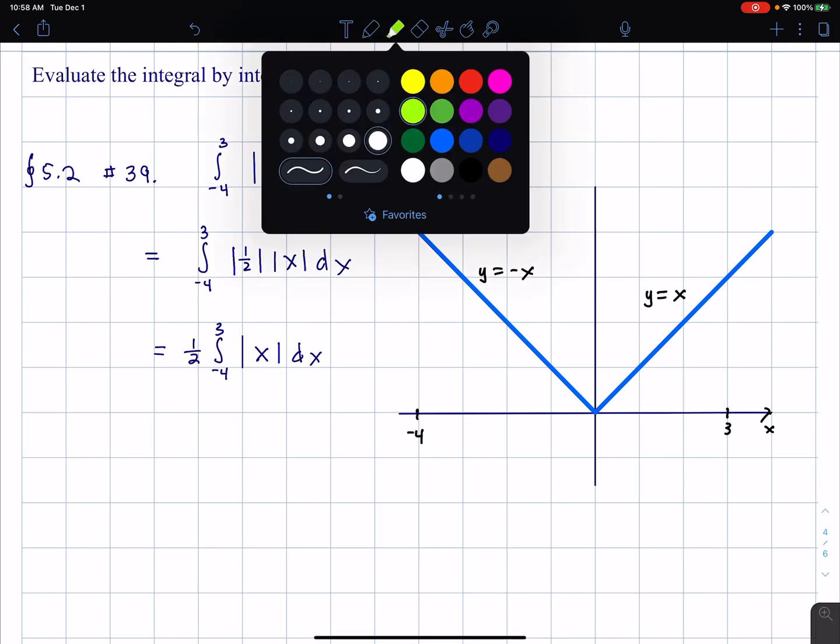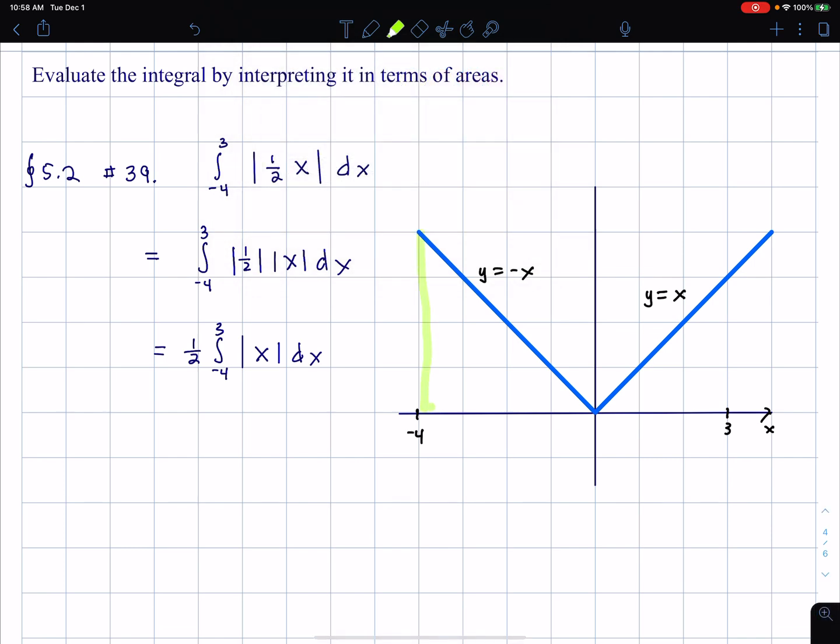And then what I do is I find the area of those regions because I'm interpreting in terms of area. Now, these curves, or the curve from negative four to three lies above the x-axis, so that in fact, the integral is equal to the area.